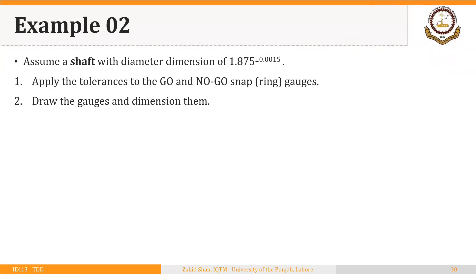Example 2. Assume a shaft with diameter dimension of 1.875 plus/minus 0.0015 inches. Apply the tolerances to the go and no-go snap or ring gauges. Draw the gauges and dimension them.